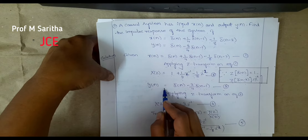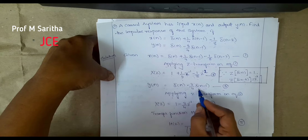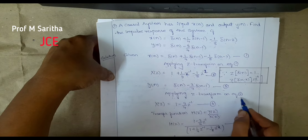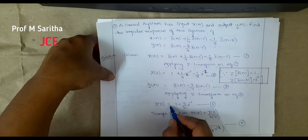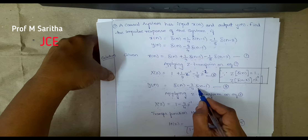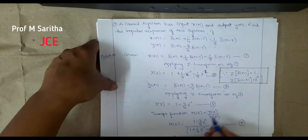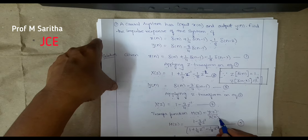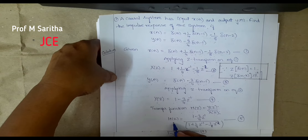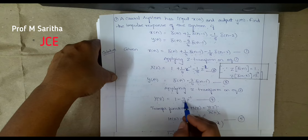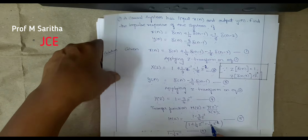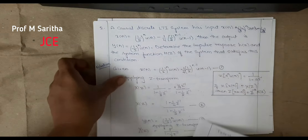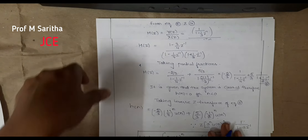Now y(n) is given as δ(n) − (3/4)δ(n−1). Let us take this as equation 3. Applying the Z-transform to equation 3, we get Y(z) = 1 − (3/4)z^(−1). Let us take this as equation 4. The transfer function H(z) = Y(z) / X(z), so we divide equation 4 by equation 2.